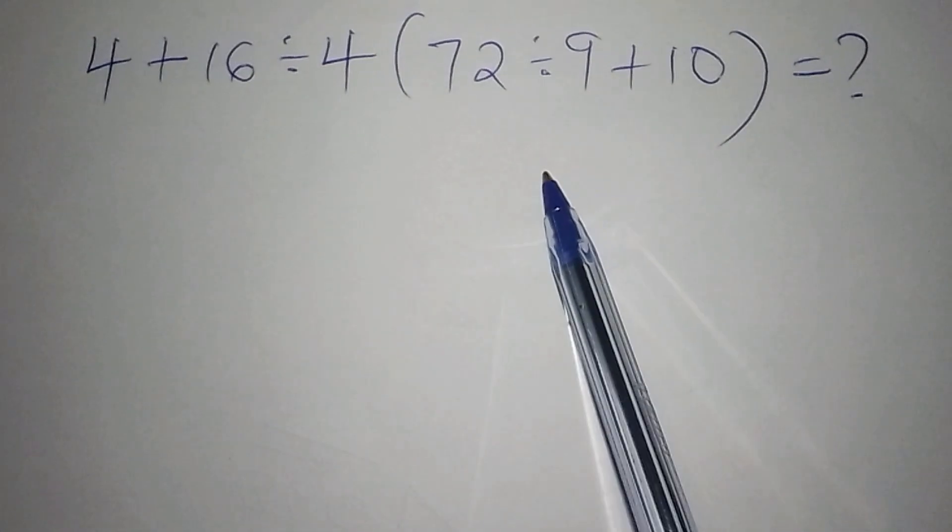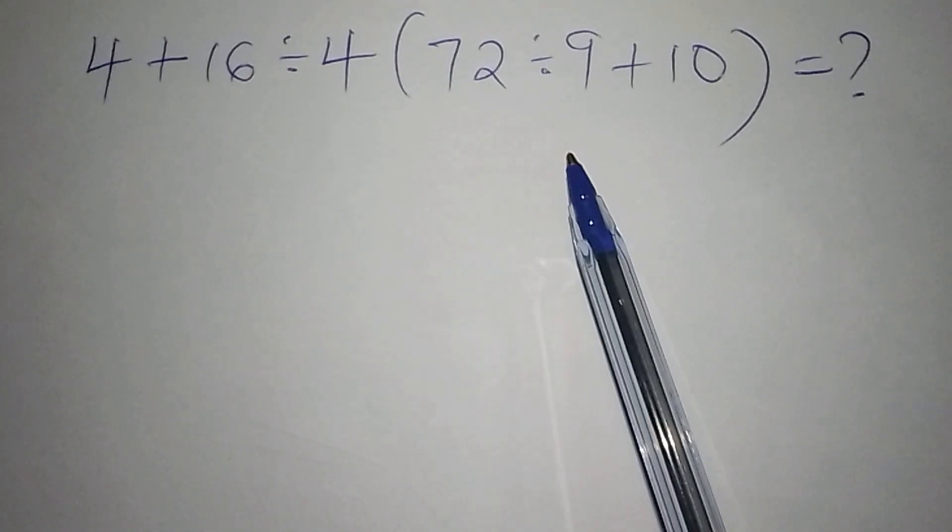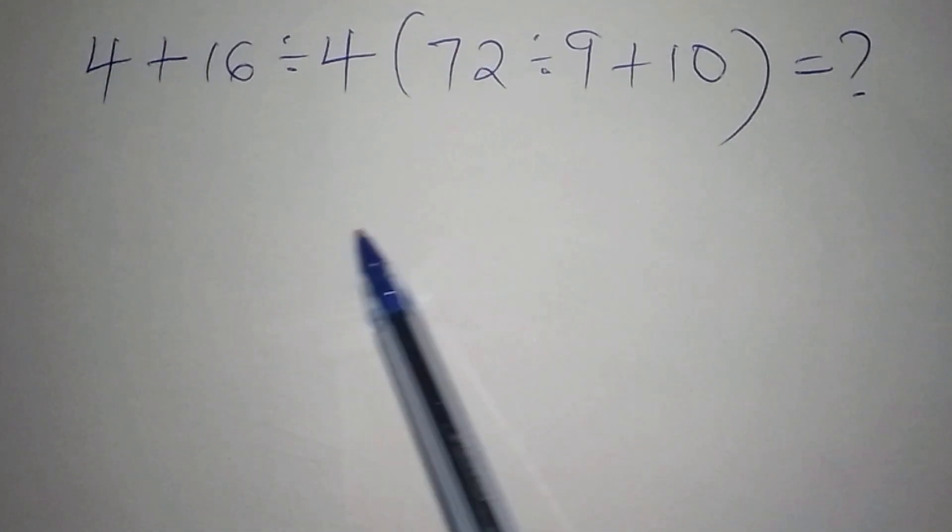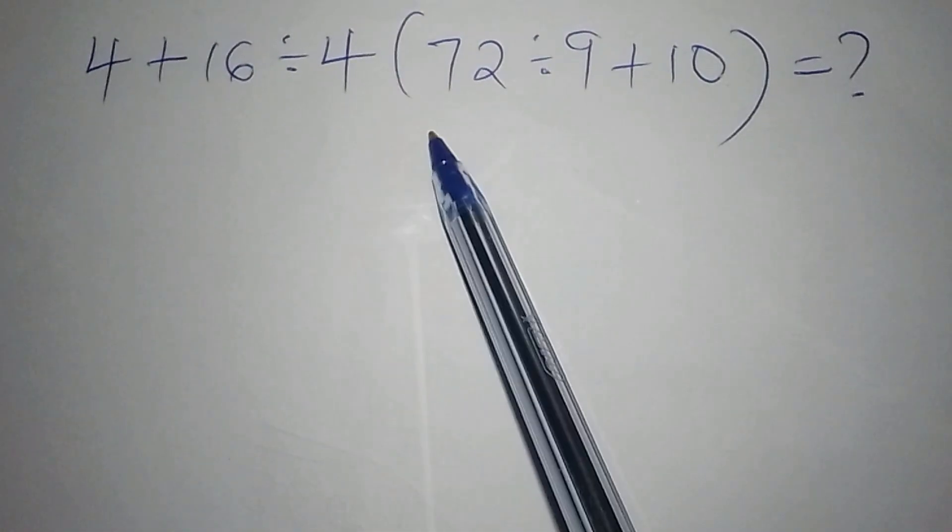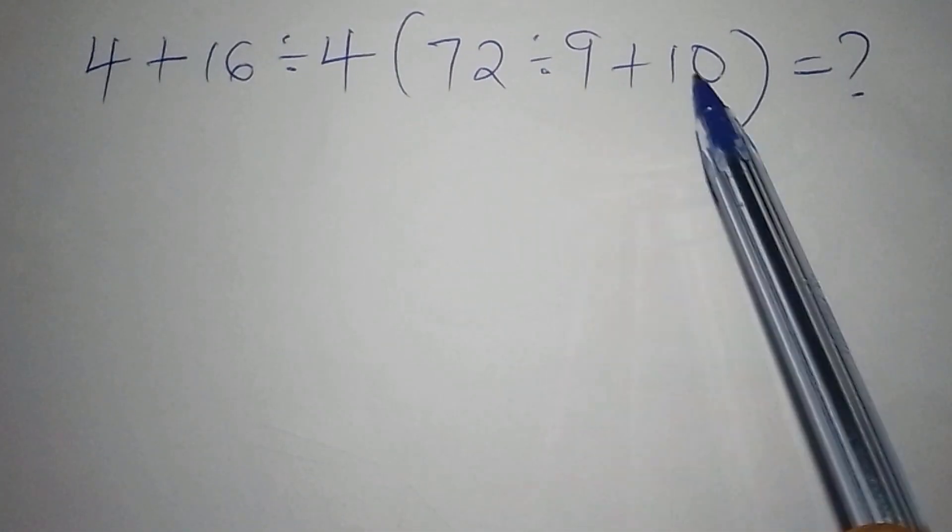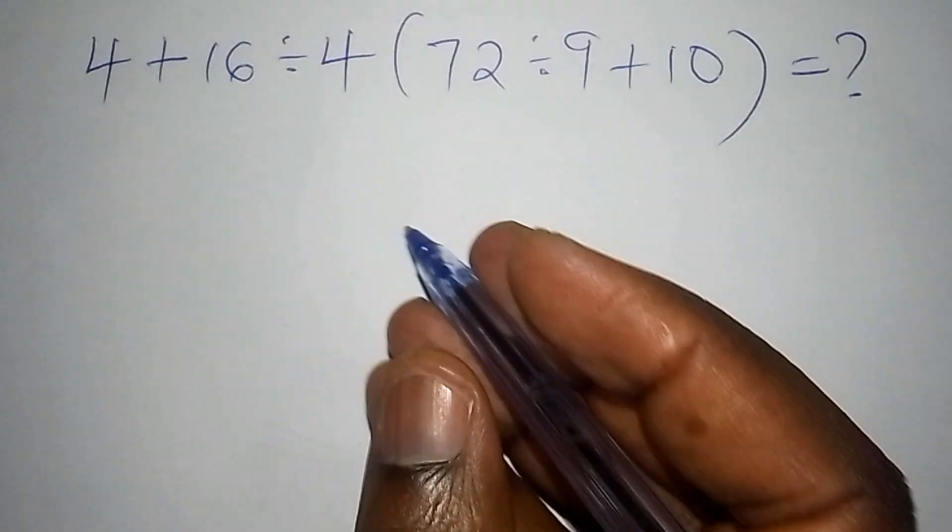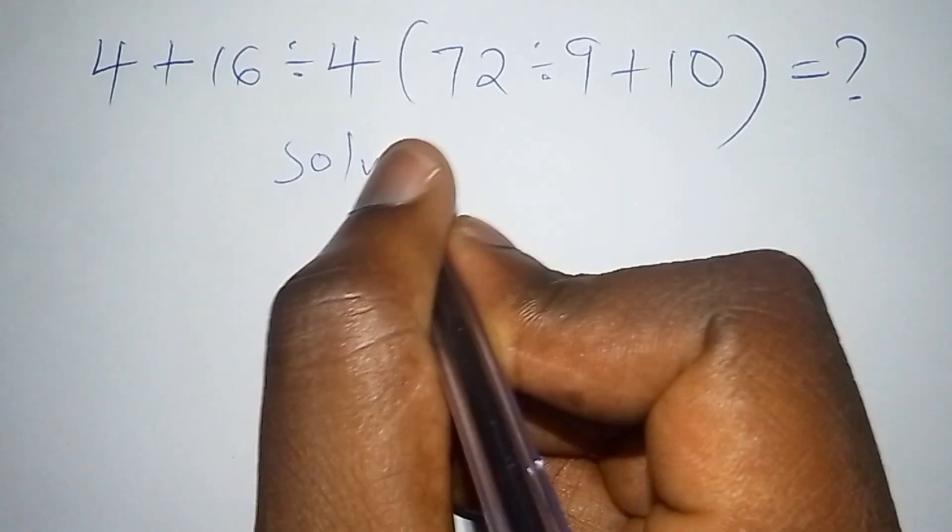Here's an example of a math problem that I want to work out in the shortest time possible. We have 4 + 16 ÷ 4(72 ÷ 9 + 10). Let's work it out within the shortest time possible. We'll begin with the solution.